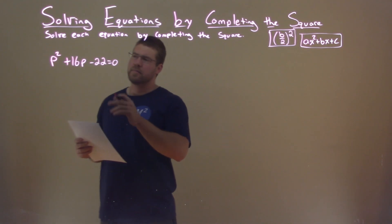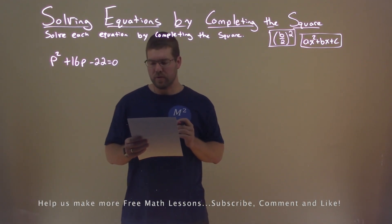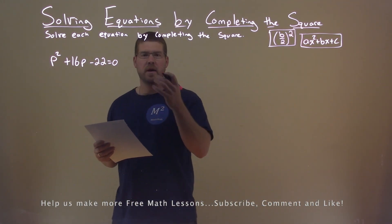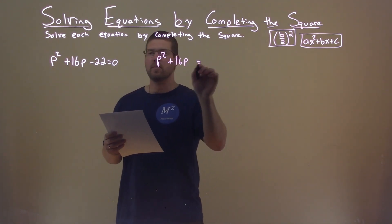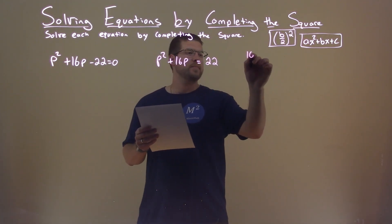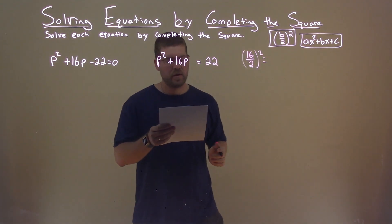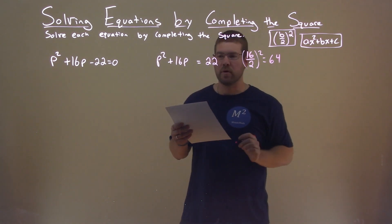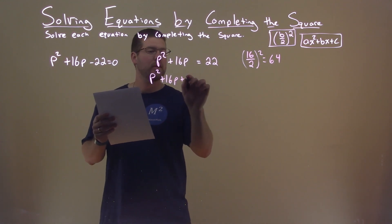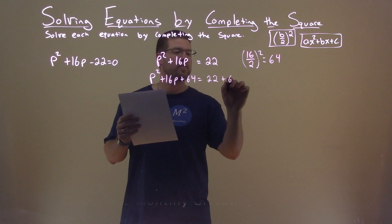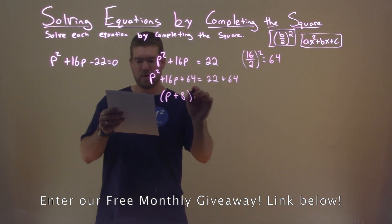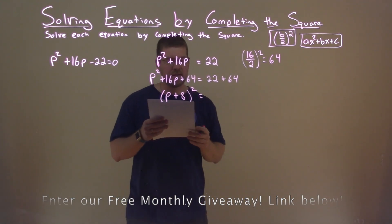We're given this problem right here: P squared plus 16P minus 22 equals 0, and we need to solve this by completing the square. First thing I'm going to do is add a 22 to both sides, so we have P squared plus 16P equals a positive 22. Now I'm looking at my B value, which is 16. I'm going to divide that by 2 and square it — that comes out to be 64. So now we can add 64 to both sides: P squared plus 16P plus 64 equals 22 plus 64. The left-hand side is a perfect square now — P plus 8, all squared — and the right-hand side adds up to 86.